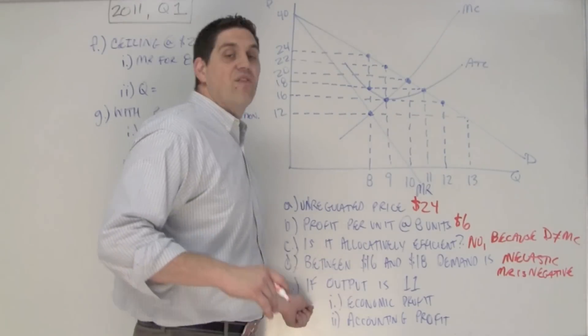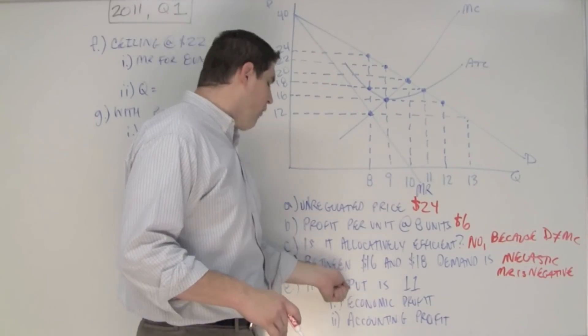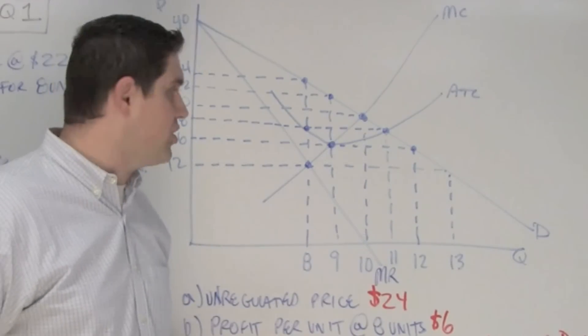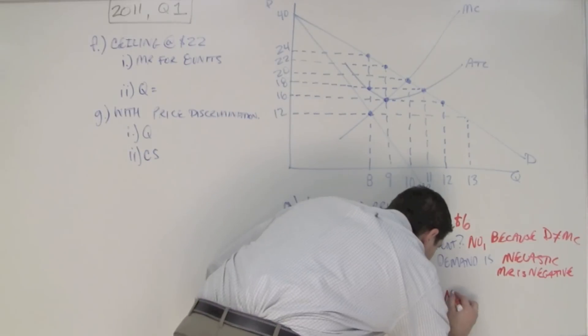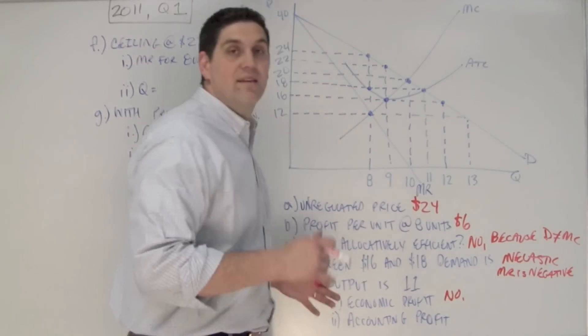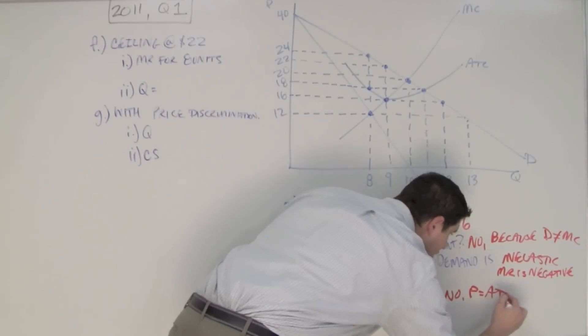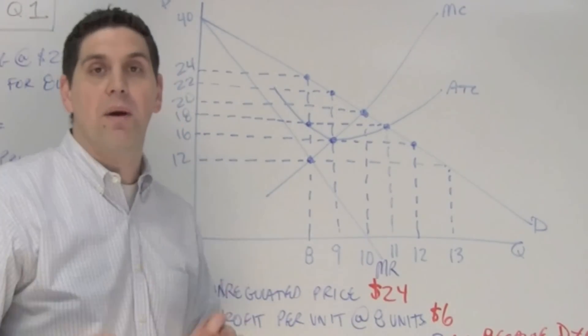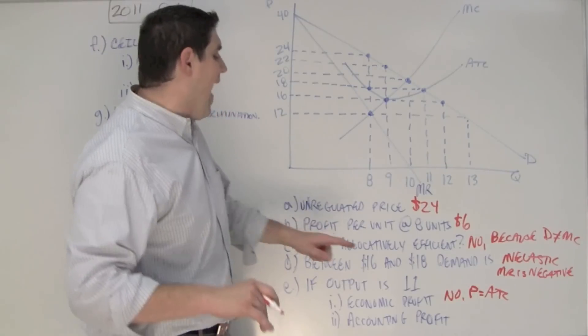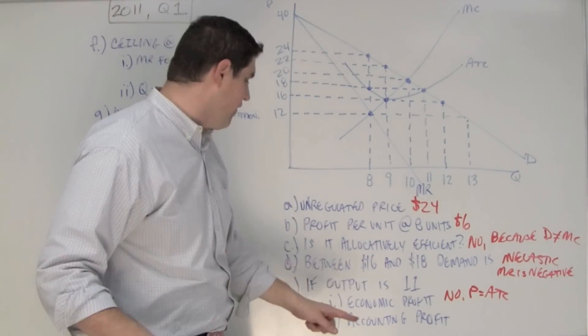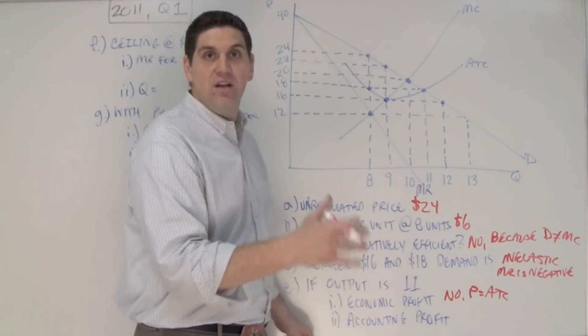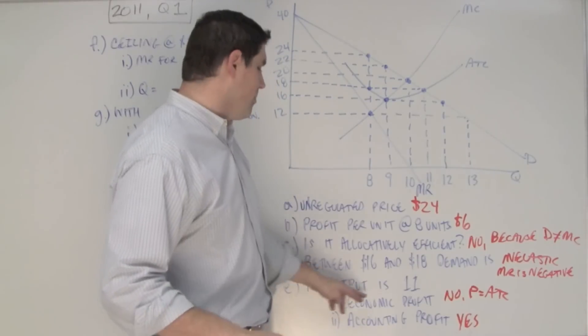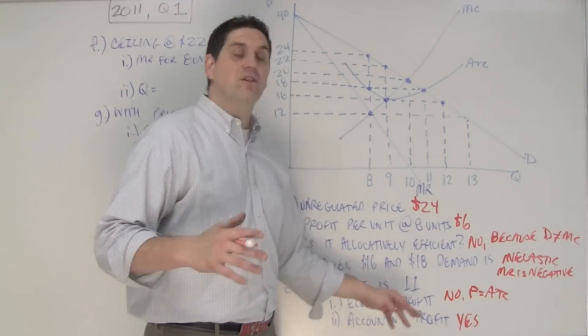The next question asks, if the government came in and started to regulate this monopoly and forced the output to be 11. If 11 is the output, is there economic profit? The answer is no. There is no economic profit. Now, this is an explain question, so you have to say why. The reason why is because the price equals the average total cost. If at your 11 units, the price and the ATC meet each other, this firm is making no economic profit or normal profit. But at that 11 units, they are still making positive accounting profit. So is accounting profit positive? The answer is yes, it is. Now, you didn't have to actually explain this one, but you should understand the idea that when you're making no economic profit, you are still making accounting profit.